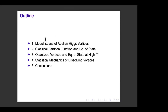The outline is: I'll remind you of the moduli space of abelian Higgs vortices, then move on to the classical partition function — work I did long ago to find the equation of state of classical vortices using a phase space. Then more recently, I've been interested in whether we can do quantum mechanics on this phase space — quantizing the second-order dynamics on the moduli space.